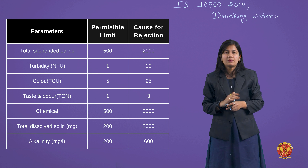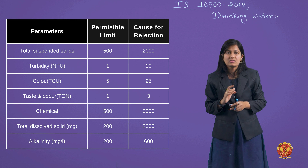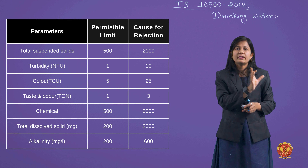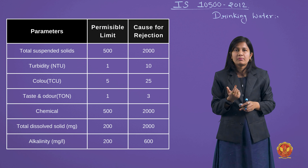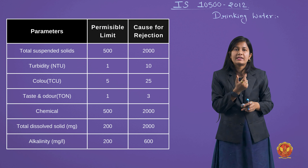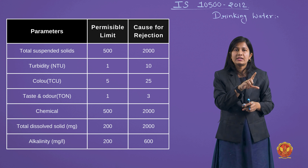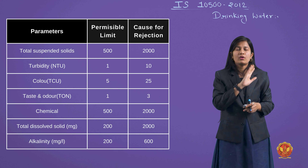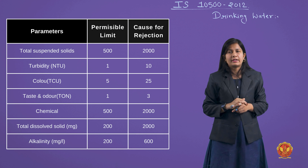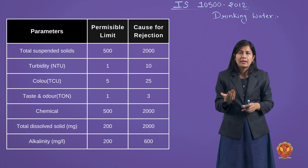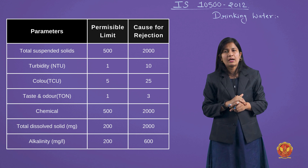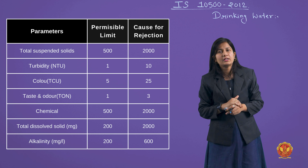25 TCU पर water को reject कर देते हैं। फिर taste and odor की बात करें — इसे TON (Threshold Odor Number) से determine करते हैं। TON की permissible limit 1 होती है, and this number should be less than 3. 3 what is the cause for rejection — you can see on the table।